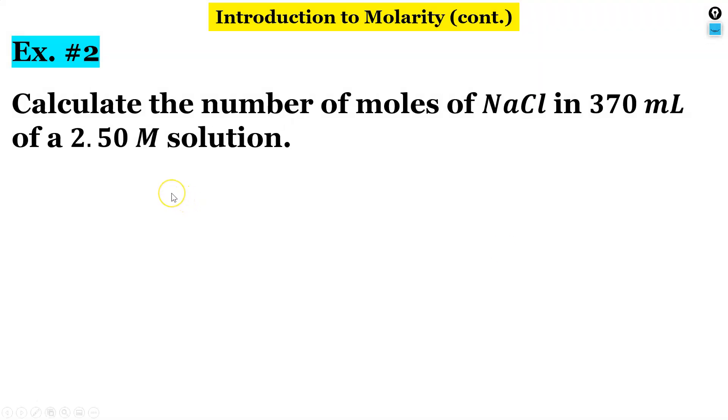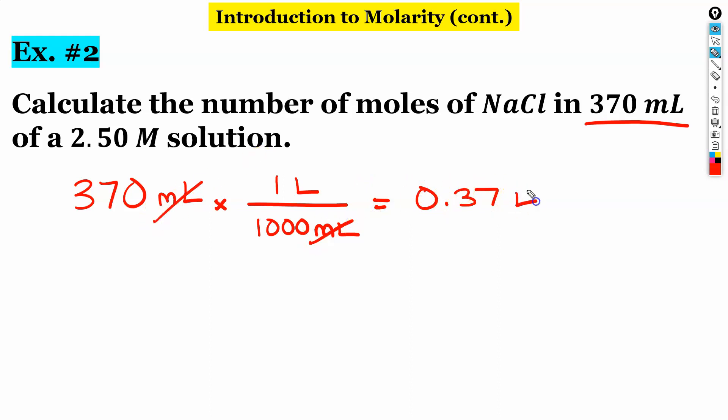All right. Calculate the number of moles of NaCl in 370 milliliters of a 2.5 molar solution. All right. Well, if you notice, we're given milliliters here. So to convert milliliters to liters, for every 370 milliliters, there are 1,000 milliliters in one liter. So I would have 0.37 liters.